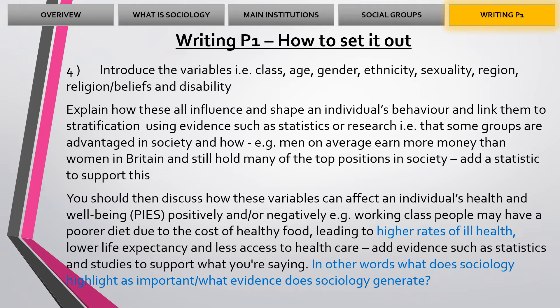Part four is where we start to bring in our social groups — the variables: class, age, gender, ethnicity, sexuality, region, religion, disability. We do need to include all of them. I know this is a lot, and as I said, P1 for just the pass has a lot to include — it is a big topic, so do make sure you're putting time and effort in. Explain what is social class, what is age, what's gender, what's ethnicity — define and explain all these elements.